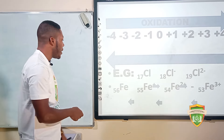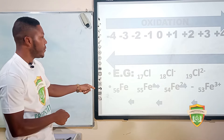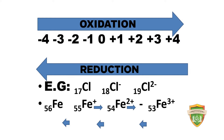Looking at iron, its atomic number is 56. When it moves toward Fe²⁺, it has lost one electron — going from 56 to 55, which is why we have a plus charge. This process is called oxidation, in which electrons are lost. Fe³⁺ means three electrons have been lost from the normal iron atom.